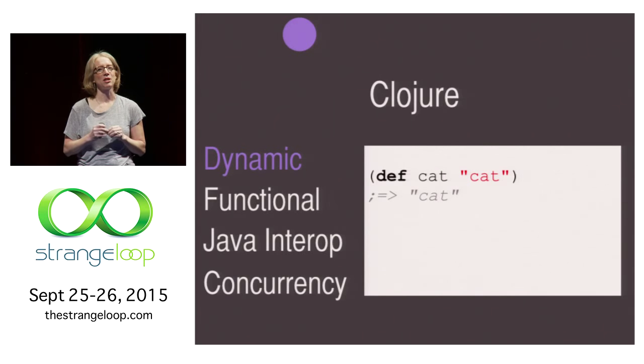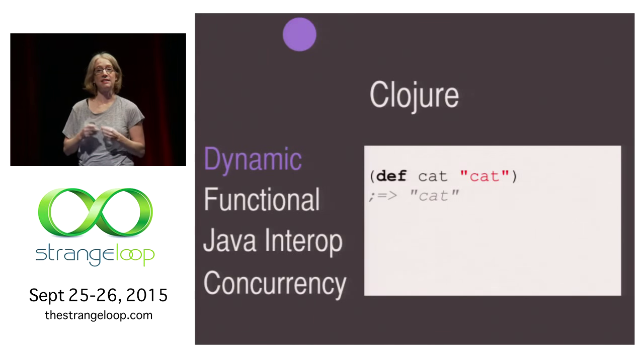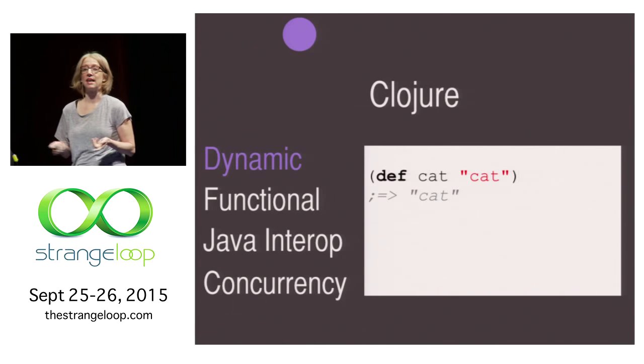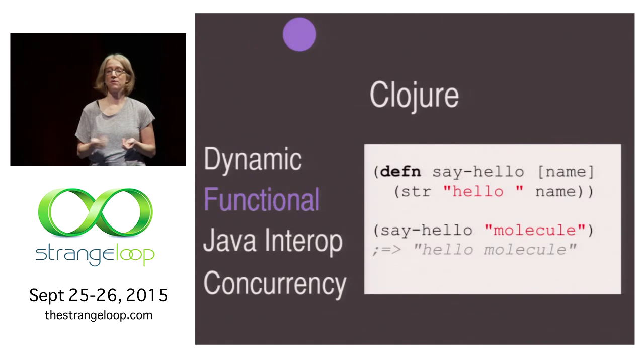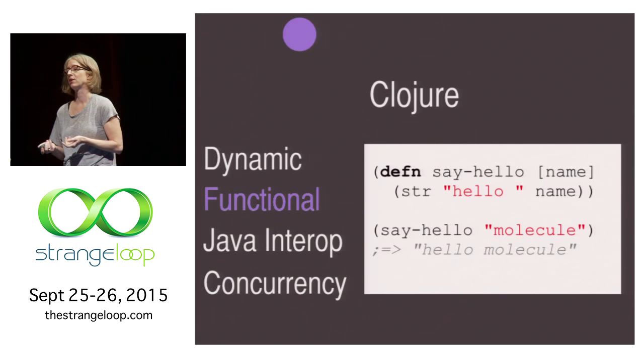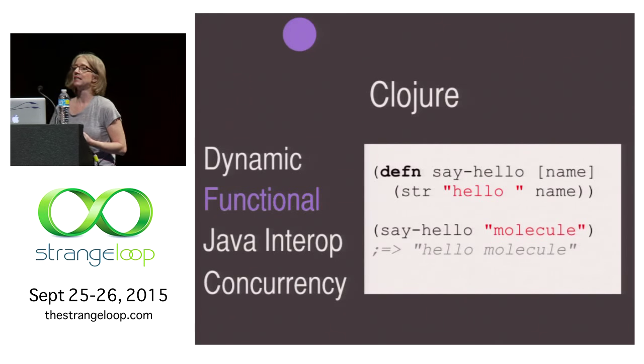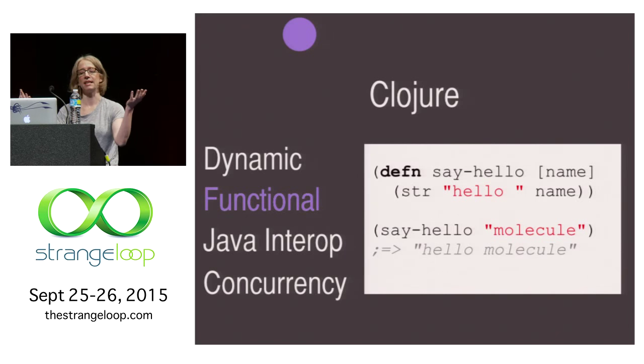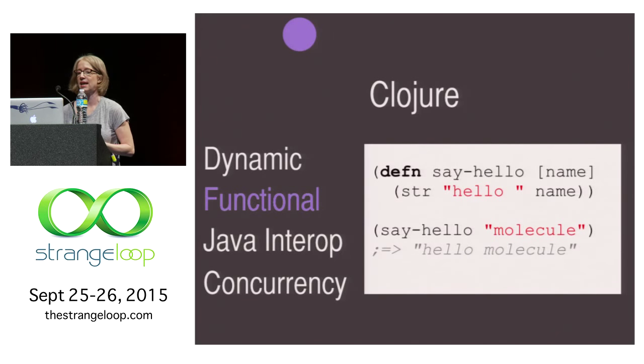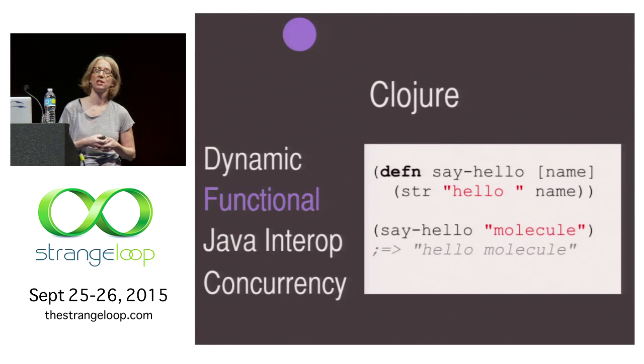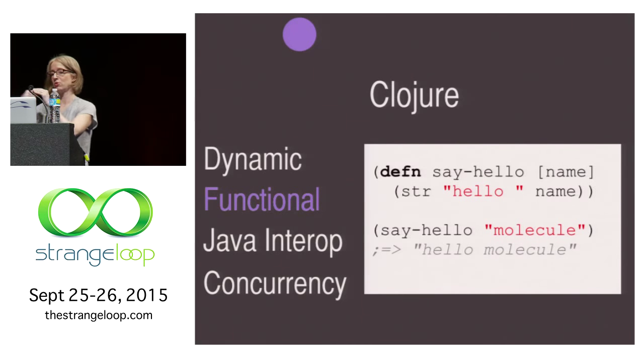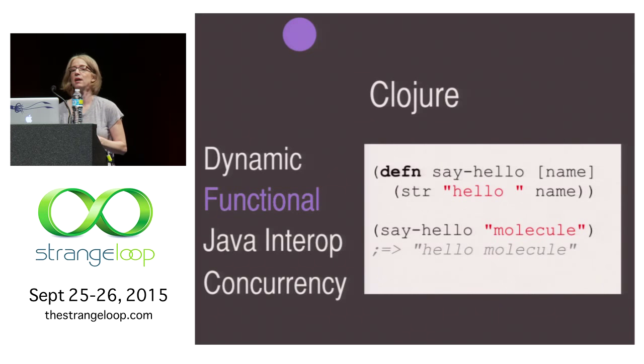Just a few words about Clojure as a language. It's a wonderful language. I really love it. It's dynamic, if you're defining a cat, you don't need to say what type it is. It's functional. Here we are. We're defining a simple function, say hello. It takes a parameter name that simply concatenates a string hello with the name. You invoke that function by putting it in the parens again. Say hello and then a string molecule will return hello molecule.